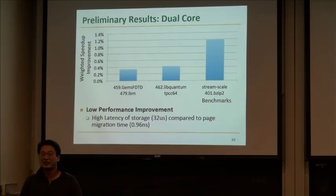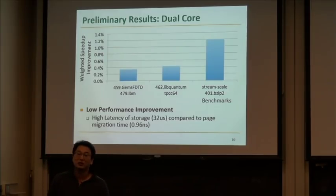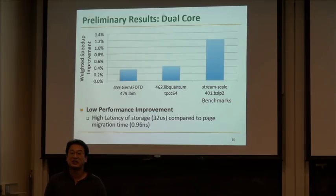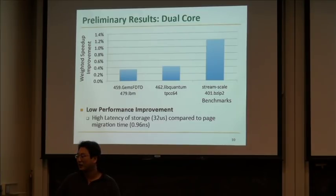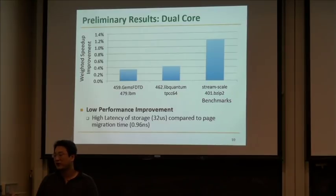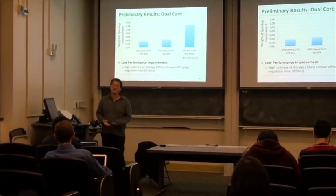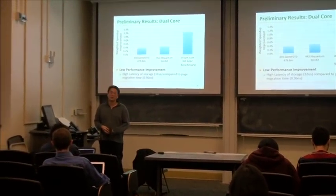The discussion continued: the experiment may not be set up to show the problem clearly. The simulation uses 10 million instructions, which is not enough. It takes about two days to get results. With longer simulation, we'd reach a saturation point where page migration frequency reduces and we get more benefit. More cores and more instructions in the environment would also help demonstrate the advantage.